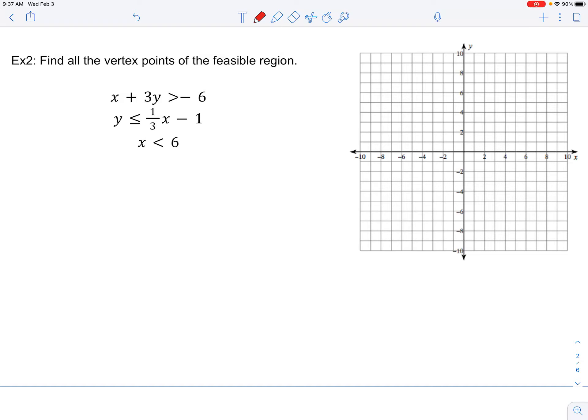Here's an explanation of example two in graphing a feasible region where we have three inequalities. We'll label them A, B, and C, and we need to shade in the feasible region and then find all the vertex points.